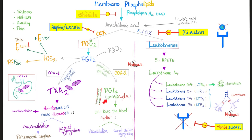We have many prostaglandins. There is prostaglandin G2, prostaglandin H2, prostaglandin I2 — also known as prostacyclin — which keeps the blood cycling, meaning the blood will keep flowing without any clots. This is the exact opposite of thromboxane A2, which is pro-thrombosis. So thromboxane A2 wants you to clot, but prostaglandin I2 or prostacyclin wants you to not clot.